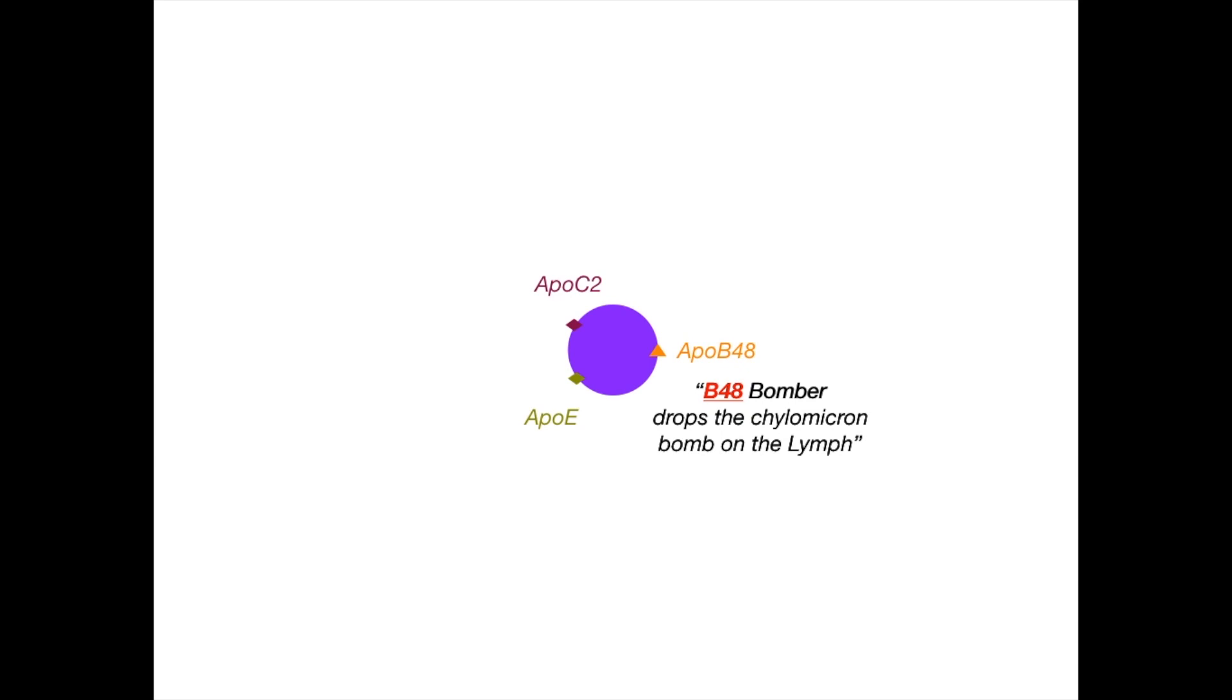Now, we already talked about the mnemonic for what APO B48 does. Remember that B48 should remind you of the famous aircraft, the B48 bomber, which drops the chylomicron bomb on the lymphatic system. But I need to talk to you first about what APOC2 does as well as APOE.